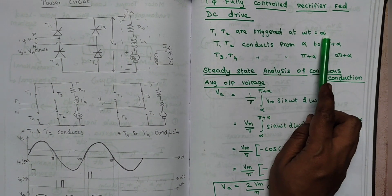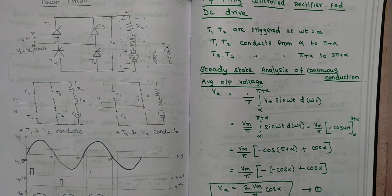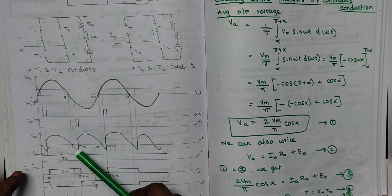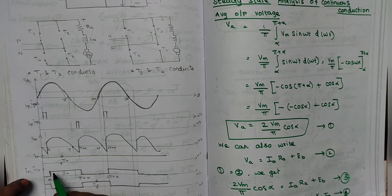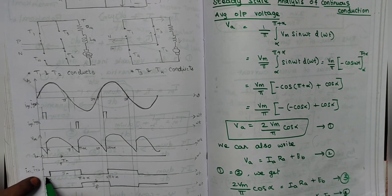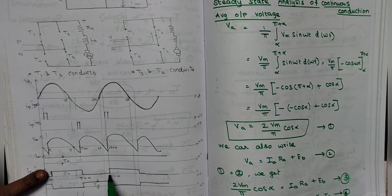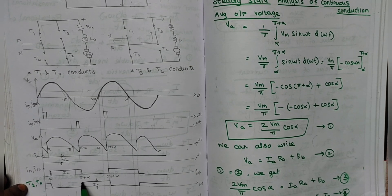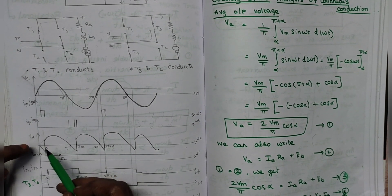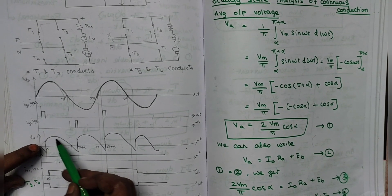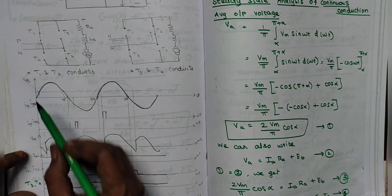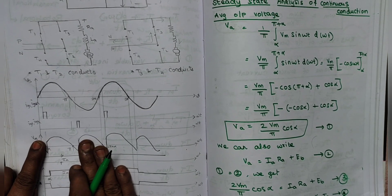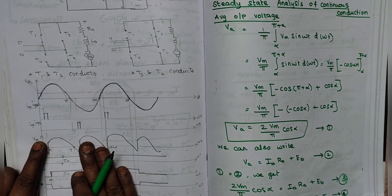T1 and T3 are triggered at ωt = α. T1 and T2 conduct from α to π + α. See the waveform: from α to π + α the conduction is by means of thyristors T1 and T2. The thyristor current is flowing from α to π + α; for thyristors T3 and T4 the current flows from π + α onward. This is the supply voltage and this is the armature output voltage.